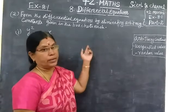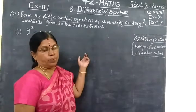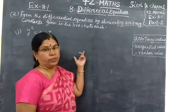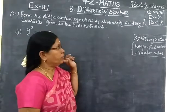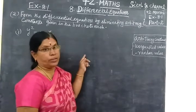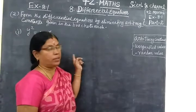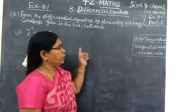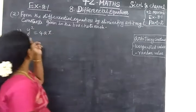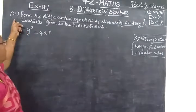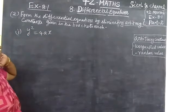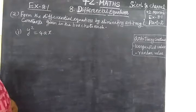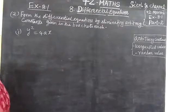Part 1 already. Part 1, we are finding the order and degree. That is questions 1 to 8. Part 2: form the differential equation by eliminating arbitrary constants given in the brackets.